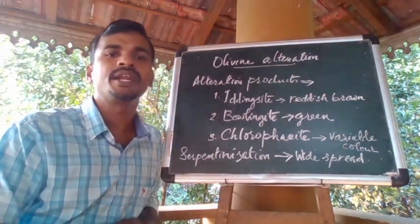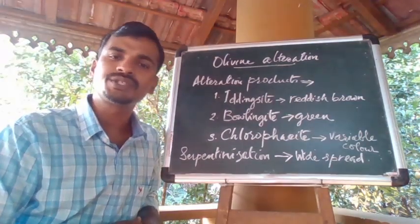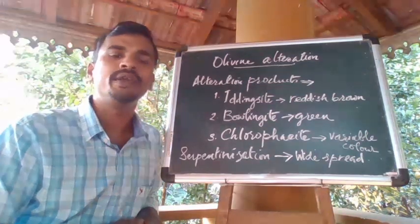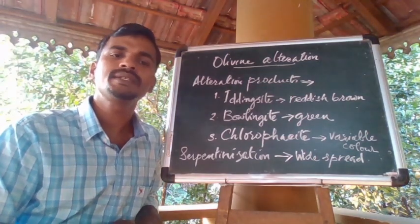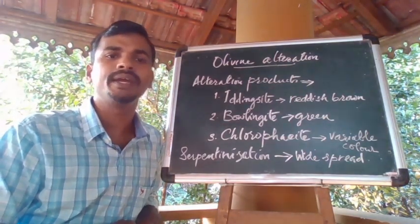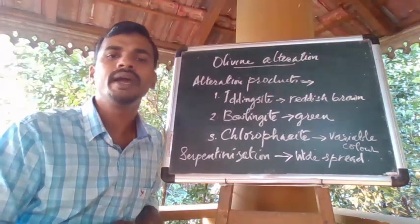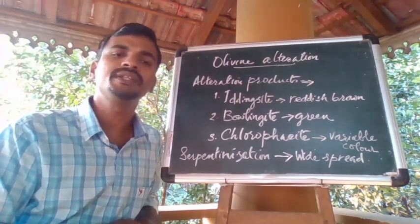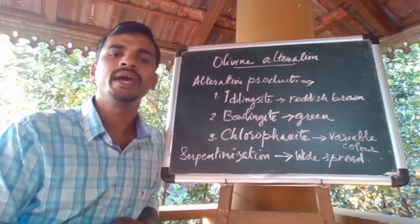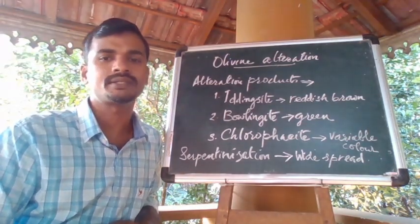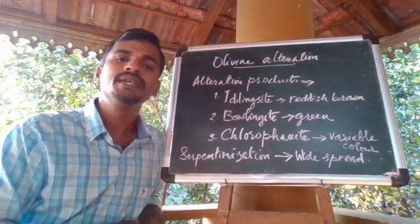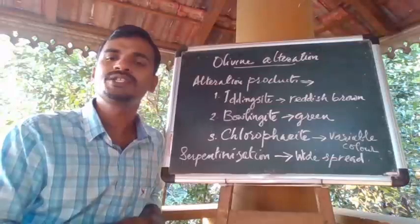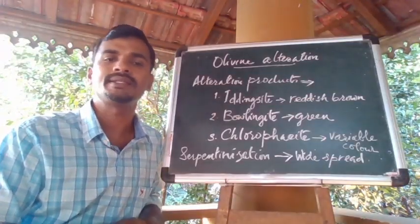Iddingsite is reddish brown and consists of smectite, chlorite, and goethite or hematite. Bowlingite is green colored and consists of smectite and chlorite together with serpentine minerals and minor talc, mica, and quartz. Chlorophaeite is variable in color and contains chlorite, smectite, goethite, and calcite.